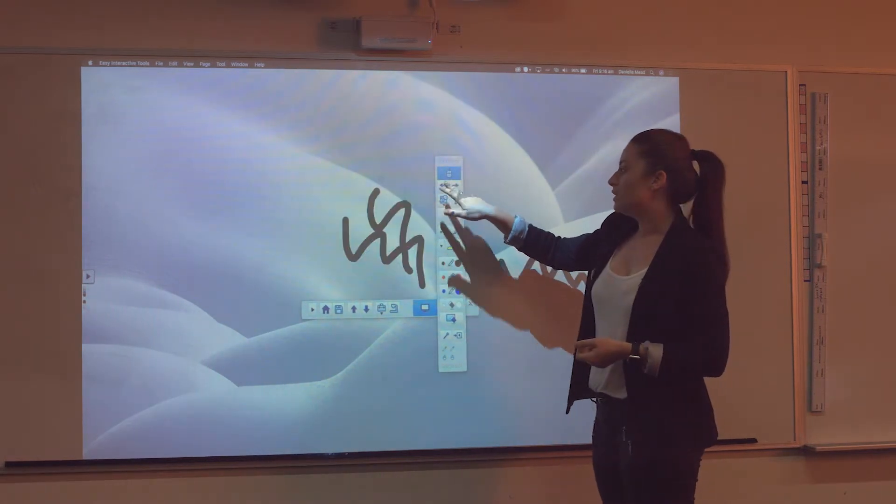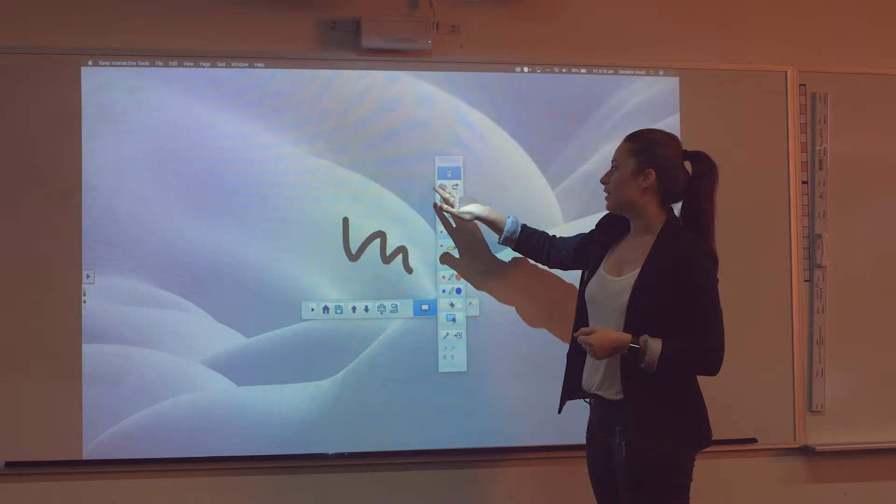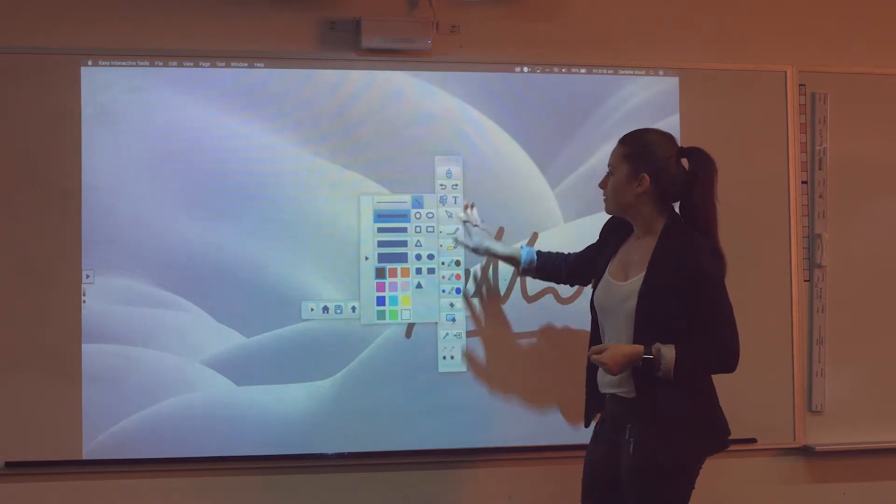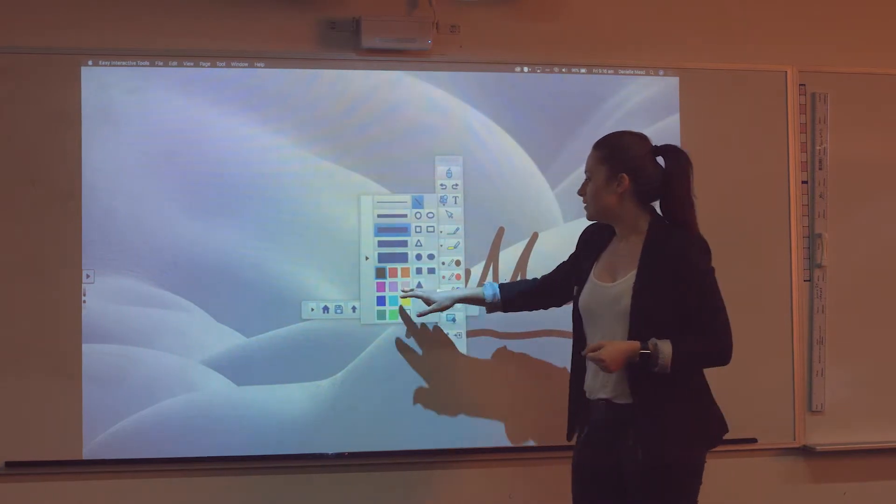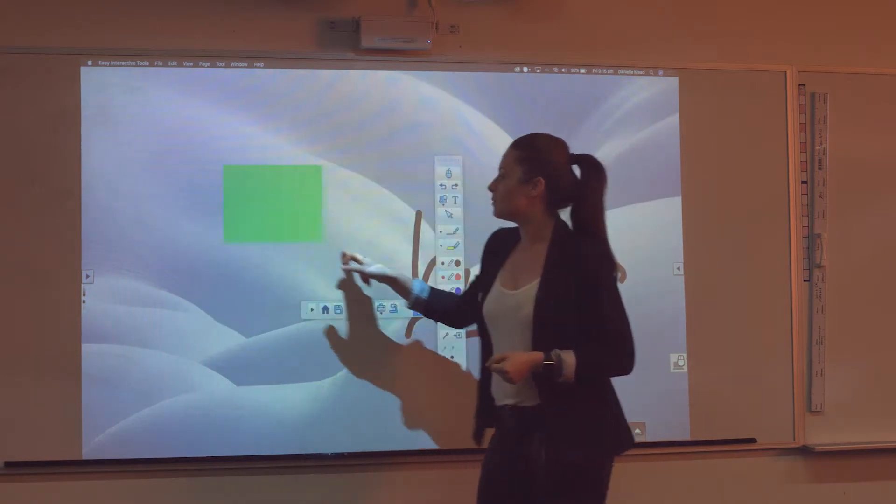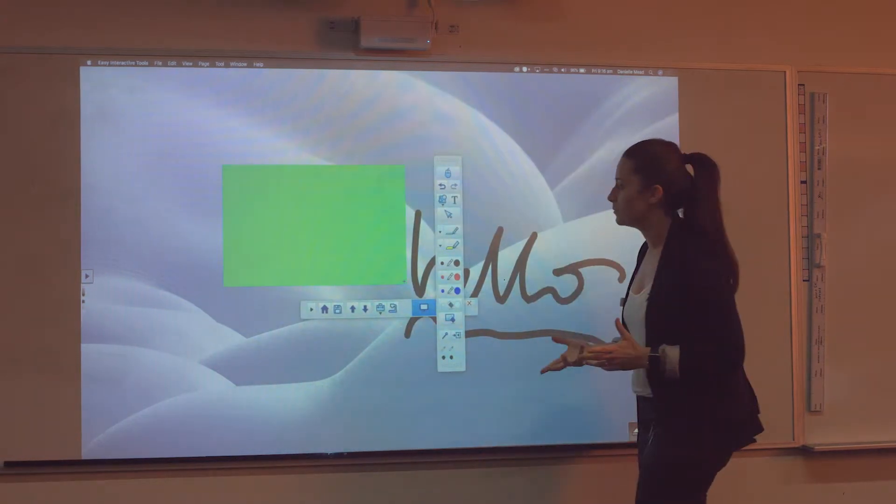Okay going down the list undo, redo, pretty self explanatory as long as you click undo and redo it will do what it asks. Shapes, so that's a drop down menu. You've got different thicknesses, different colours, different types of shapes and it's just a matter of clicking and dragging. Pretty simple stuff.